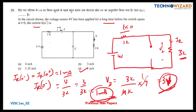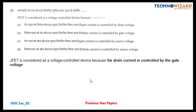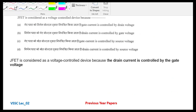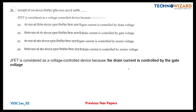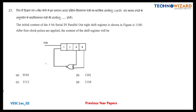Question number 26: JFET is considered a voltage-controlled device because the drain current is controlled by the gate voltage. Therefore option B is the correct answer.